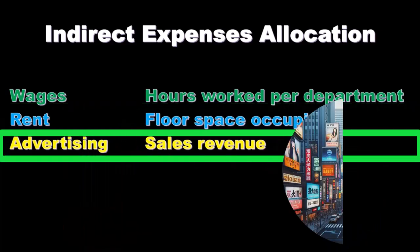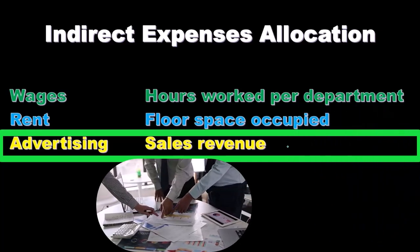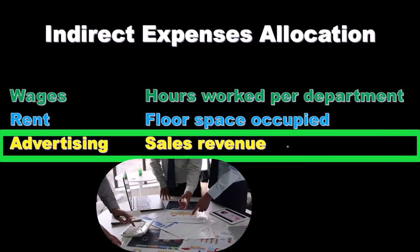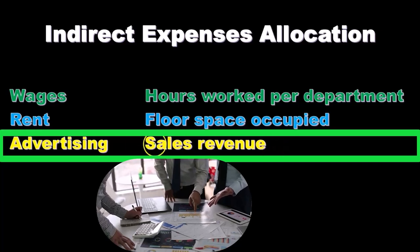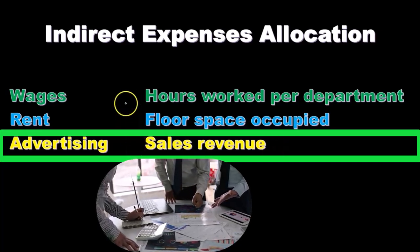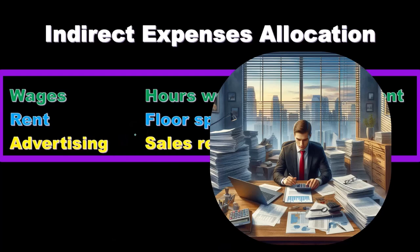For advertising, we might have advertising for multiple departments and need to apply the advertising budget costs to each department. A common activity base there is sales revenue, because there's hopefully a correlation between advertising and sales revenue. We look at the relative revenue each department generates as a percentage, then use those percentages to apply out the advertising. Different activity bases drive the relative cost appropriately to the departments.